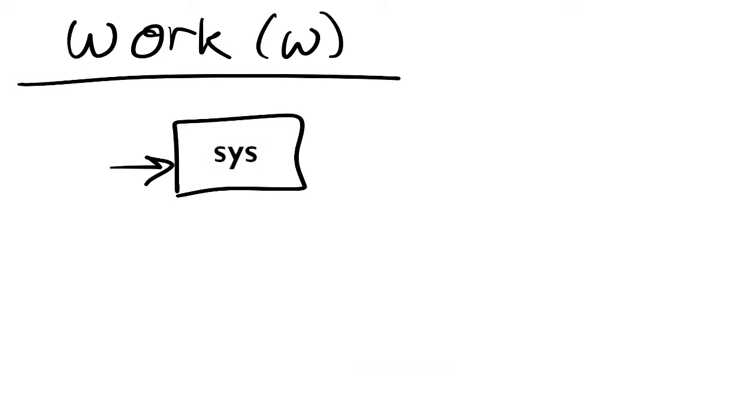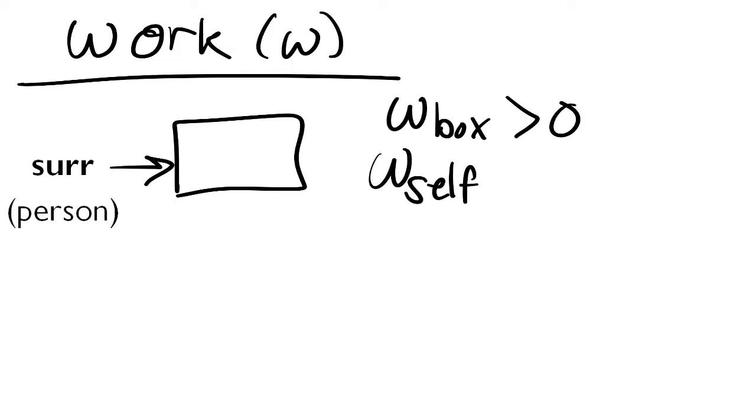We're pushing the box. From the perspective of ourselves, if we are the surroundings, the surroundings are doing work on the box. If we talk about ourselves doing work, we're exerting the effort to do negative work. If we think from the perspective of the box, then the box is receiving work, and so the work for the box is positive. The work for the box is positive, and the work for ourselves is negative.